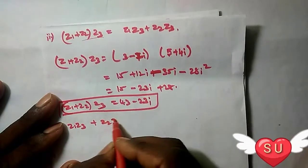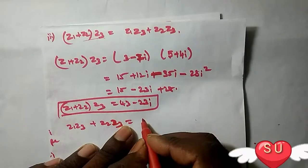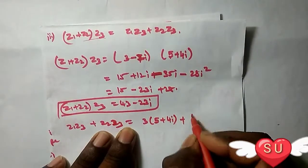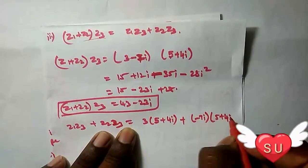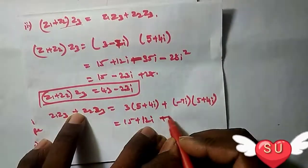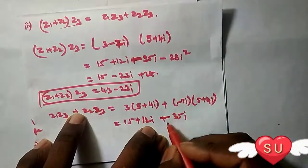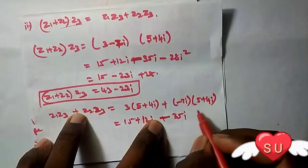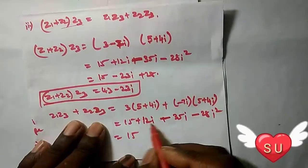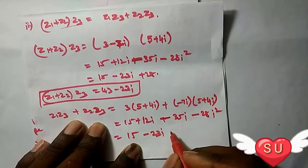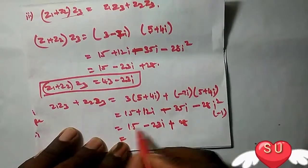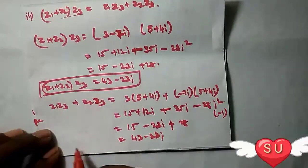Z1 value 3. Z1 times Z2 plus Z1 times Z3: 3 times 5 plus 4i, plus minus 7i times 5 plus 4i. Three fives are 15, three fours are 12i. Minus 7 times 5 are minus 35i. Minus 7 fours are minus 28 i-squared. i-squared equals minus 1, so minus minus gives plus 28. So 15 plus 28 is 43, minus 35 plus 12 gives minus 23i.